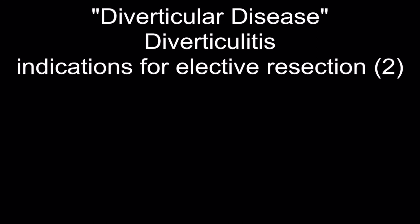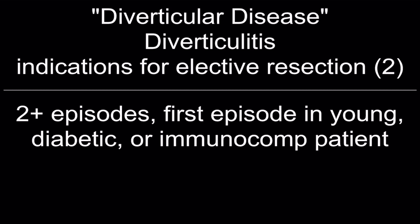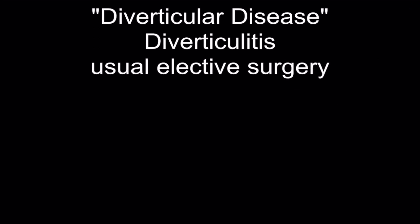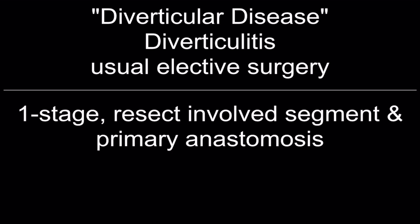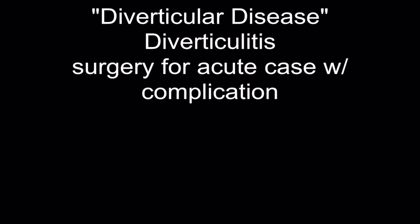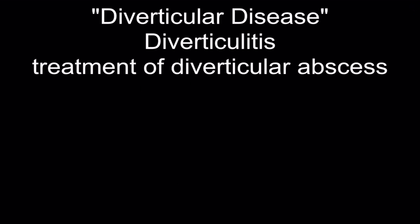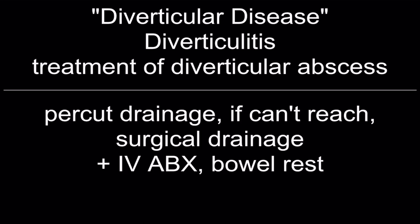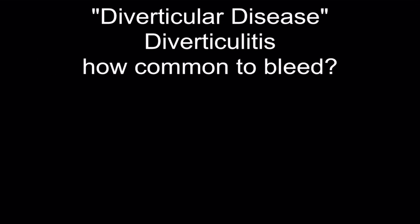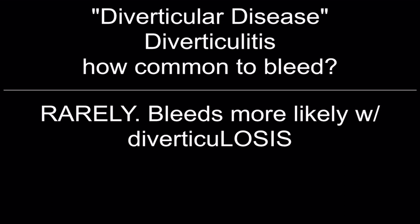Indications for elective resection: two or more episodes, or first episode in a young, diabetic, or immunocompromised patient. Elective surgery: first-stage resection of involved segment and primary anastomosis. Surgery for acute complicated cases: Hartmann's procedure — resect the involved section, leave a colostomy and stapled rectal stump, requires reanastomosis later. Treatment of diverticular abscess: percutaneous drainage; if unreachable, surgical drainage with IV antibiotics and bowel rest. Bleeding is very rare in diverticulitis; must rule out colon cancer.